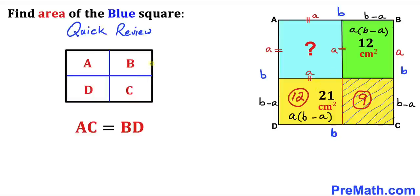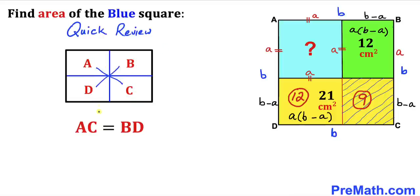Now I'm going to spend a couple of minutes on a quick review. We have a rectangle that has been divided into four parts. The area for this compartment is A, area for this one is B, area for this one is C, and likewise this one is D. Then we simply crisscross: the product A times C equals B times D, as you can see over here.